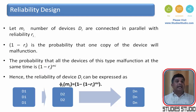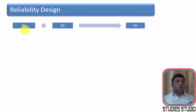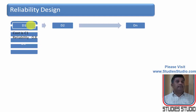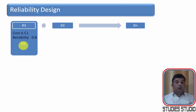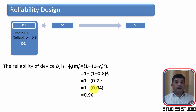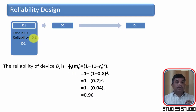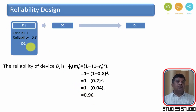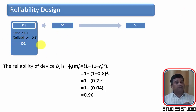Let us see with a numerical example how reliability increases. For D1, let the reliability be 0.8. If we take one more machine of D1 in parallel, applying the formula gives 1 − (1 − 0.8)^2 = 0.96. The reliability increased from 0.8 to 0.96, showing that keeping more than one system in parallel clearly gives enhanced reliability.